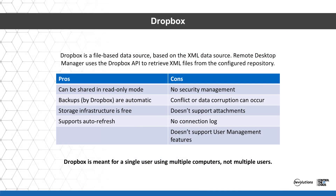RDM uses the Dropbox API to retrieve XML files from a configured repository. Dropbox doesn't need to be installed on the client machine. Plus, it's free, has automatic backups, and you can share your data in read-only mode. Similar to Devolutions Online Drive, there are no security management or user management features. That's why Dropbox is meant for a single user using multiple computers, not multiple users.